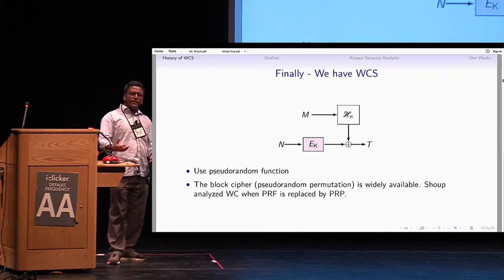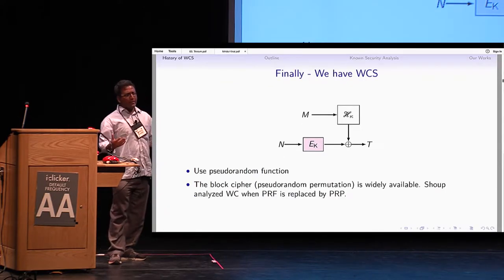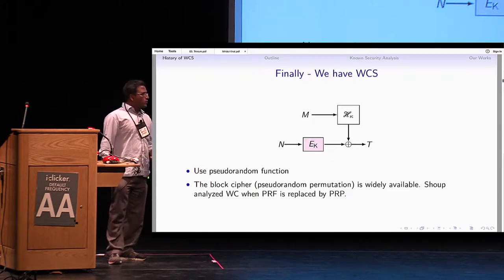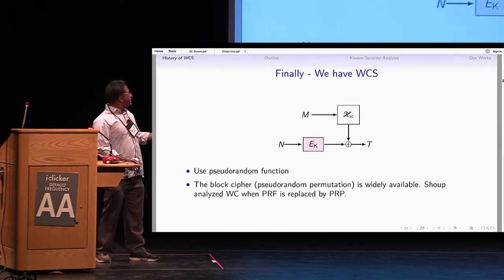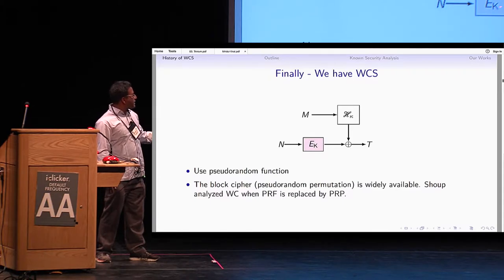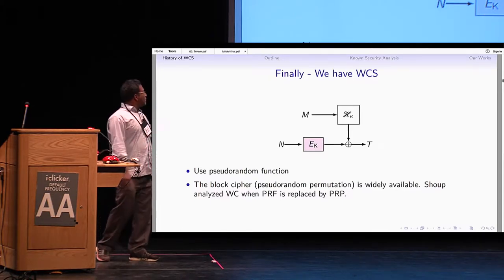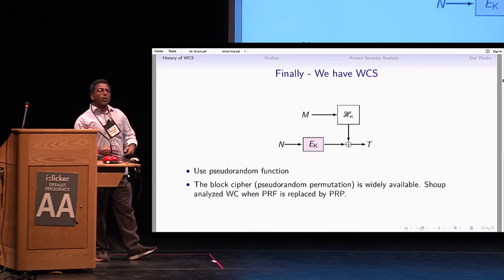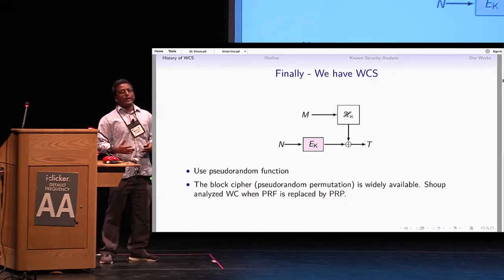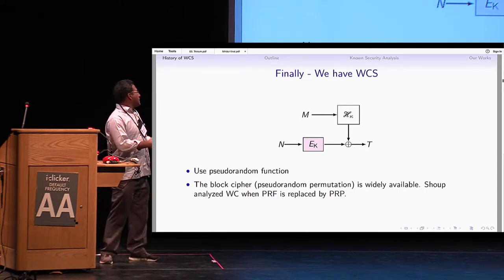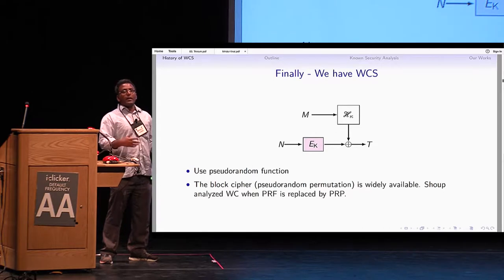However, a PRF is not as readily available as a block cipher. So what Shoup considered is replacing the PRF with a block cipher. The popular model for the block cipher is a pseudorandom permutation. The analysis proceeds at the cost of applying the switching lemma.